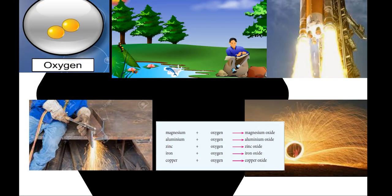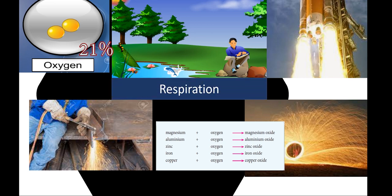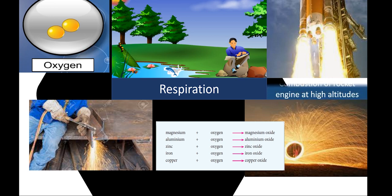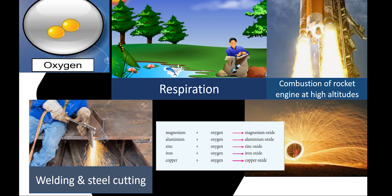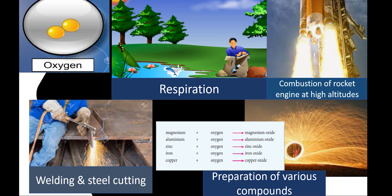The composition of oxygen in air is around 21%. All living things need oxygen for respiration. Oxygen is also involved in combustion, for example the combustion of rocket engines at high altitudes. Oxygen is also needed for welding and steel cutting, and is involved in the preparation of various compounds.